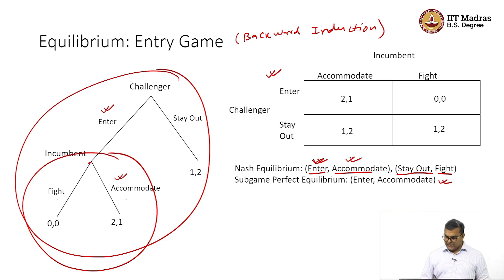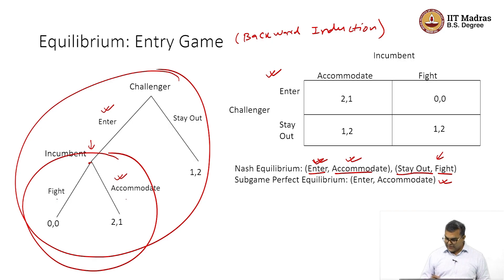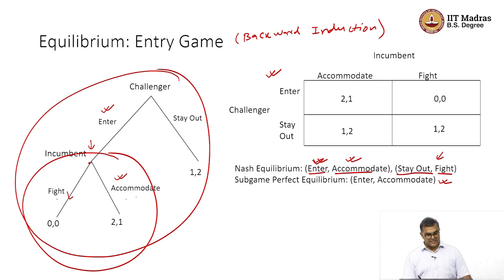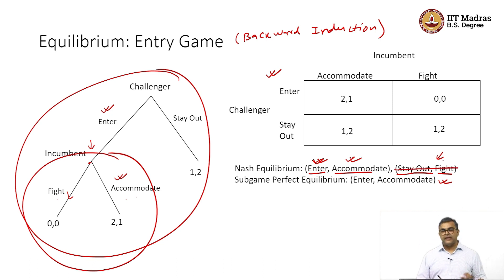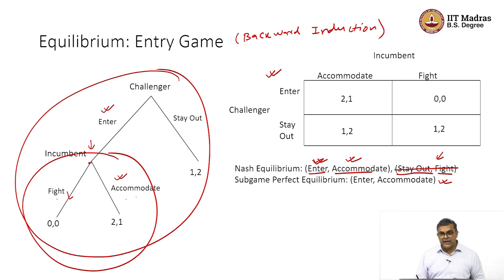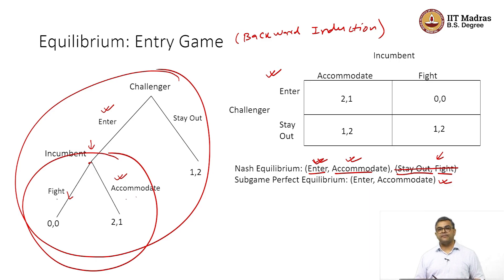What about stay out-fight? In the smaller subgame, stay out is not part of it — only fight can happen. But incumbent fighting in that subgame is not rational because accommodate gives a better payoff. So stay out-fight does not induce Nash-like behavior in all subgames and therefore is not a Subgame Perfect Equilibrium. Enter-accommodate induces Nash-like behavior everywhere and therefore is the Subgame Perfect Equilibrium.